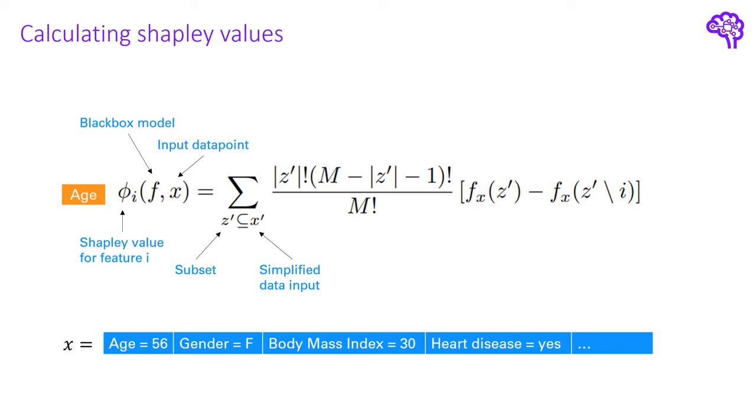So one of those subsets could be for instance a subset of age and body mass index. This means we only consider to have information for those two. We don't know the values of gender and heart disease and the other features.